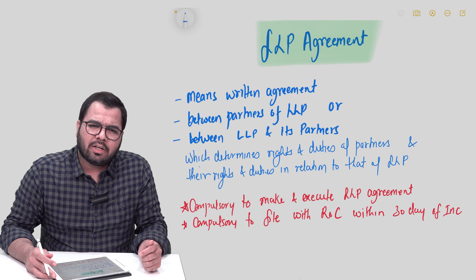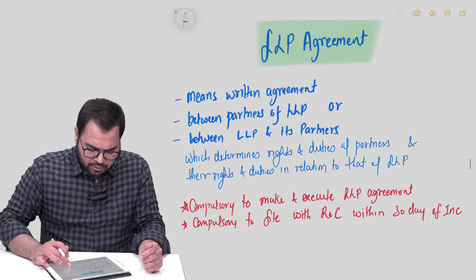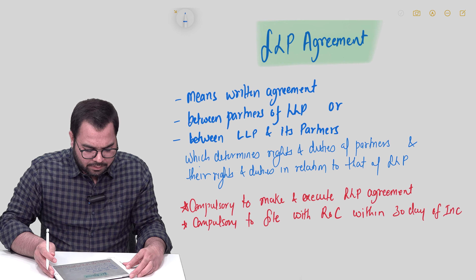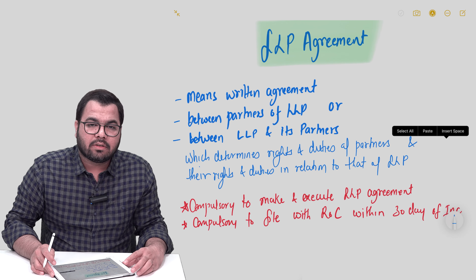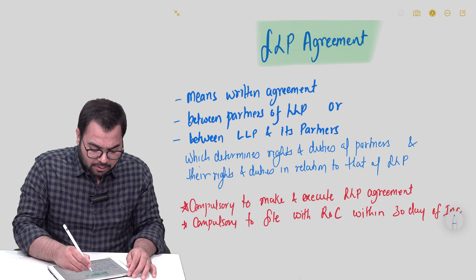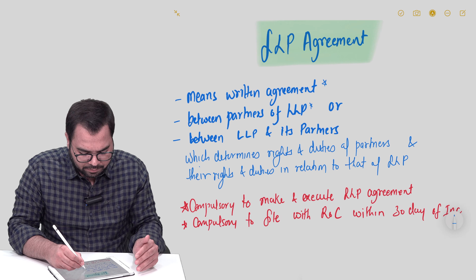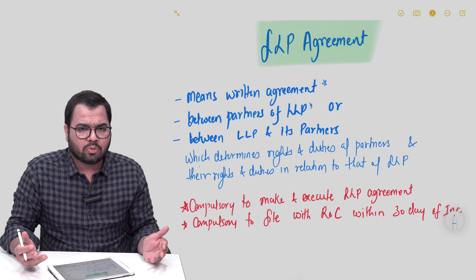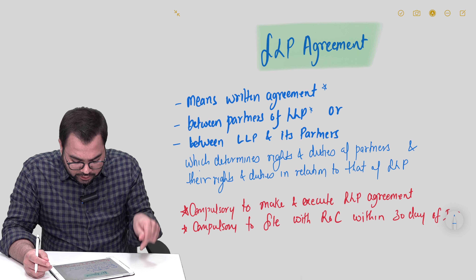Let's talk about the LLP agreement in a little more detail — what it is about and what the various clauses are. It is defined in the LLP Act 2008. The definition provides that an LLP agreement means a written agreement — very important — unlike a trust, where an oral agreement is possible. For an LLP agreement, it has to be a written agreement between the partners of the LLP, or between the partners and the LLP, which determines the rights and duties of the partners and their rights and duties in relation to that LLP.